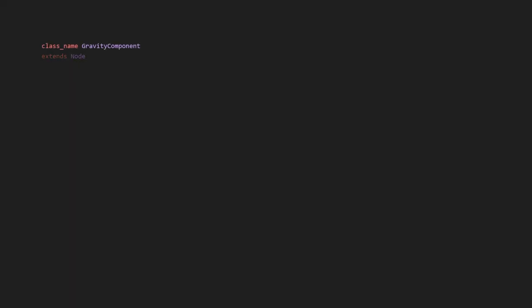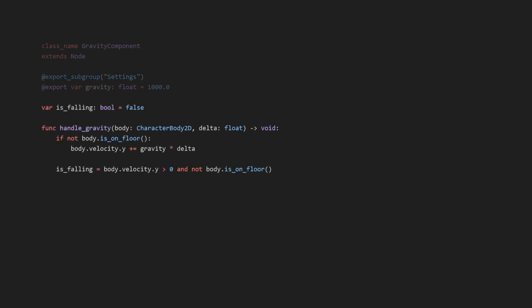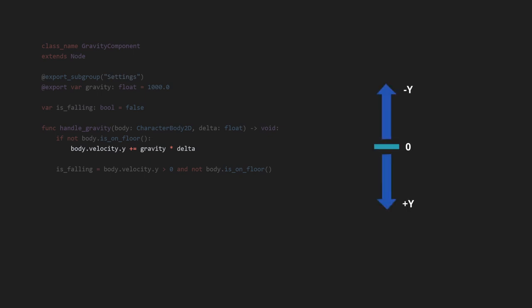Give this script a class name called GravityComponent so we can use it in other scripts. We'll also add an export variable called 'gravity' so we can set it in the editor. I like adding variables under an export subgroup because it creates a category that can expand or collapse. Let's add a function for handling the gravity: we check if the body is not on the ground — if it's in the air, we add gravity to the body, multiplied by delta time. In Godot, a positive y value is down and a negative y value is up. The last line sets the variable 'is_falling' to true or false depending on y velocity.